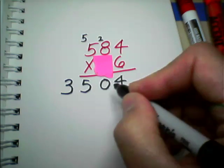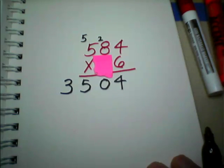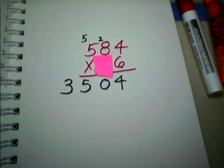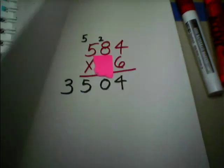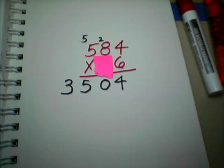So, unless I made a mistake, we better check. 584 times 6 is 3,504. The same as it was the last time we did the problem. Okay.